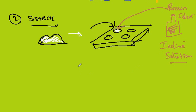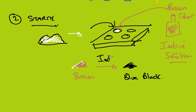This is a positive test for starch. So the colour change in a positive test for starch is the iodine solution will change from brown to blue black indicating the presence of starch.